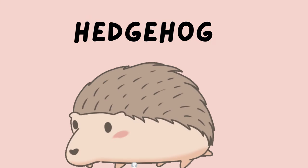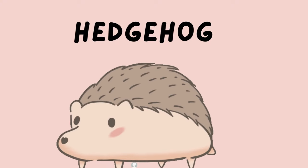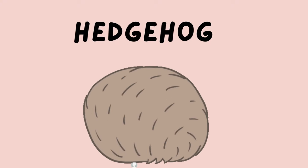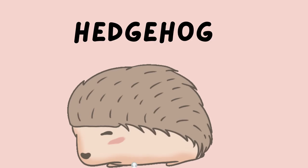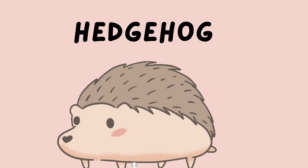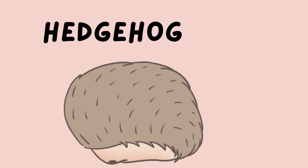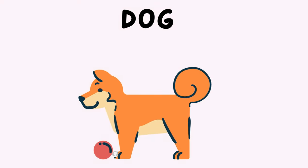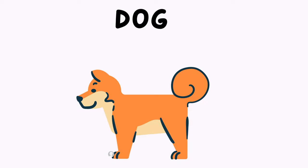Hedgehog. Hedgehogs eat leaves and plants and they also eat small animals like ants to survive. Dogs. Dogs eat beef and they eat vegetables too to survive, including fruit.